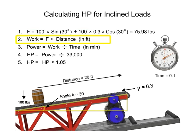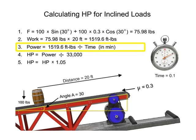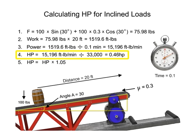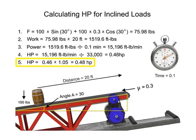Then, determine the amount of work required by multiplying the force by the distance: 75.98 pounds × 20 feet = 1,519.6 foot-pounds. Next, calculate the power by dividing the work by the time: 1,519.6 ÷ 0.1 minutes = 15,196 foot-pounds per minute. Convert to horsepower by dividing by 33,000, yielding 0.46 horsepower. Finally, add 5% to compensate for estimated friction losses, giving a final result of 0.48 horsepower. With this result, system designers can ensure the right size motor is available to operate the conveyor on an incline.